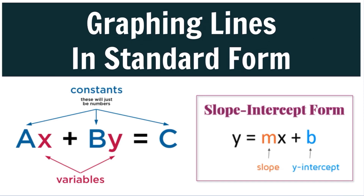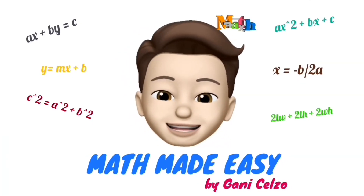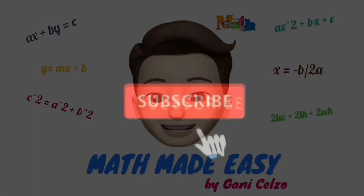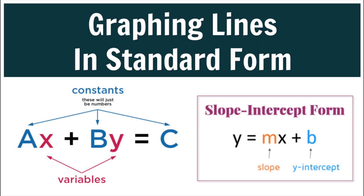Today, we're learning how to graph lines in standard form AX plus BY is equal to C. In slope-intercept form, Y is equal to MX plus B, where M is the slope and B is the Y-intercept.